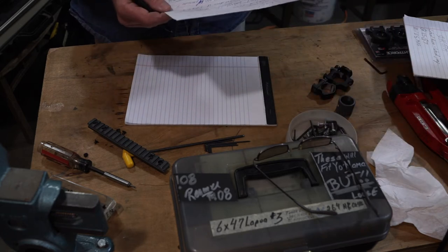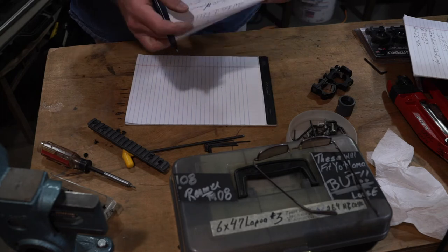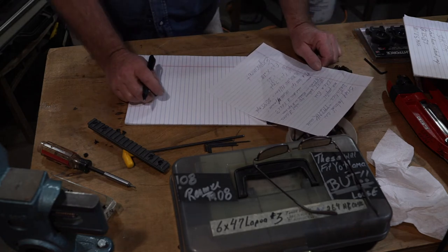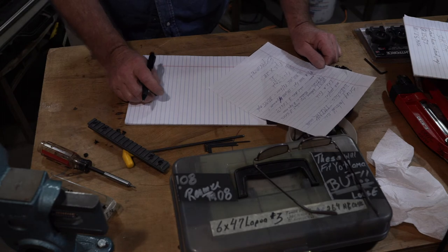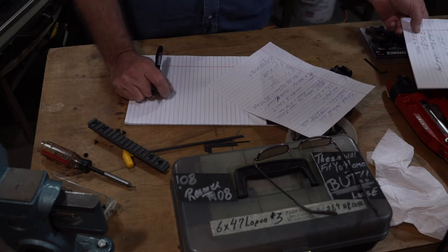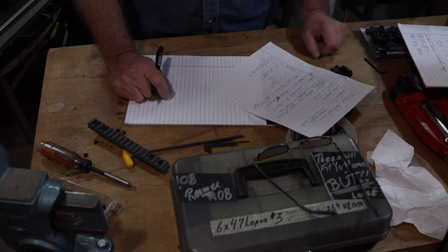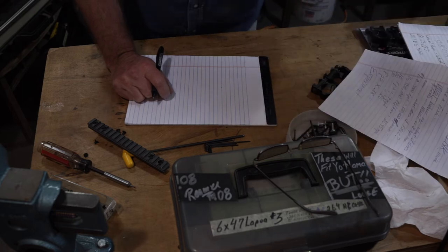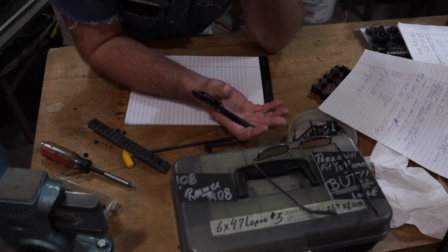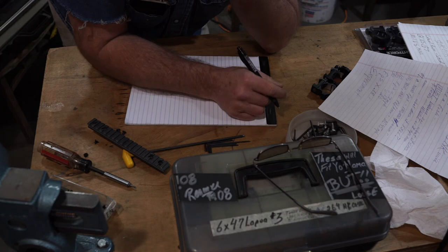I actually have a piece of paper here because there's some stuff I can't remember that has to do with ballistics. We're going to get to that in a minute because we need to talk about g1 versus g7, mil versus MOA.